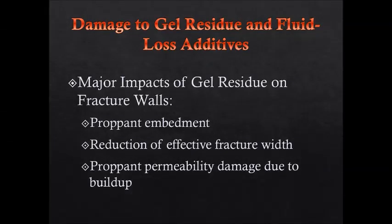The first way in which conductivity is decreased is through damage from gel residue or fluid loss additives. Gel residue is commonly referred to as filter cakes and consists of the substances deposited on the fracture walls as fluid leaks off into the formation. Fluid loss additives are substances used to maintain the volume of a slurry, which is a mixture of suspended solids and liquids. Gel residue has numerous impacts on fracture walls, including proppant embedment, reduction of effective fracture width, and proppant permeability damage due to buildup.